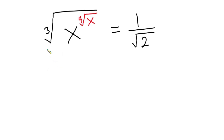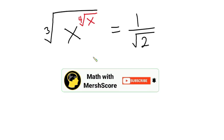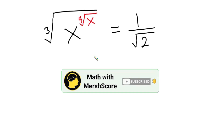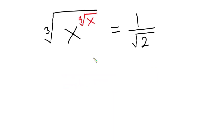Hello everyone. In this video we have a nice radical equation: the cube root of x to the power of the fourth root of x is equal to 1 over the square root of 2, and we have to find the value of x. Before we begin, if you are new here please consider subscribing, and also don't forget to like this video.